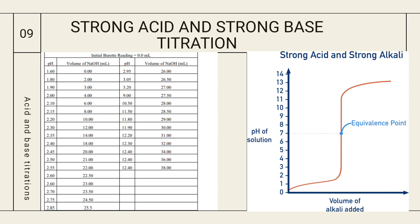When we add NaOH from the burette to acid in the conical flask, we first take the reading at 0 mL — pH is 1.6 with only HCl present. As we add NaOH 1–2 mL at a time, there is only a slight increase in pH. Near the endpoint, at 26 mL of NaOH the pH is 3.05, but adding just 0.5 mL more raises it to 3.20, and another 0.5 mL causes the pH to jump directly to about 9. This sharp jump is characteristic of a strong acid-strong base titration.